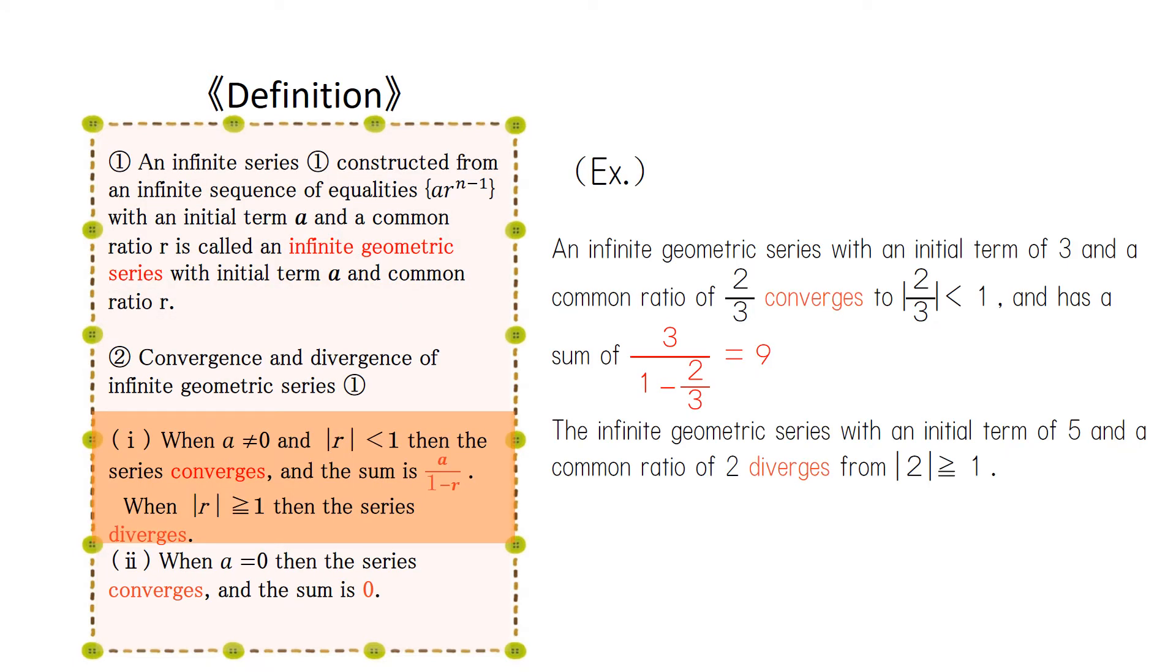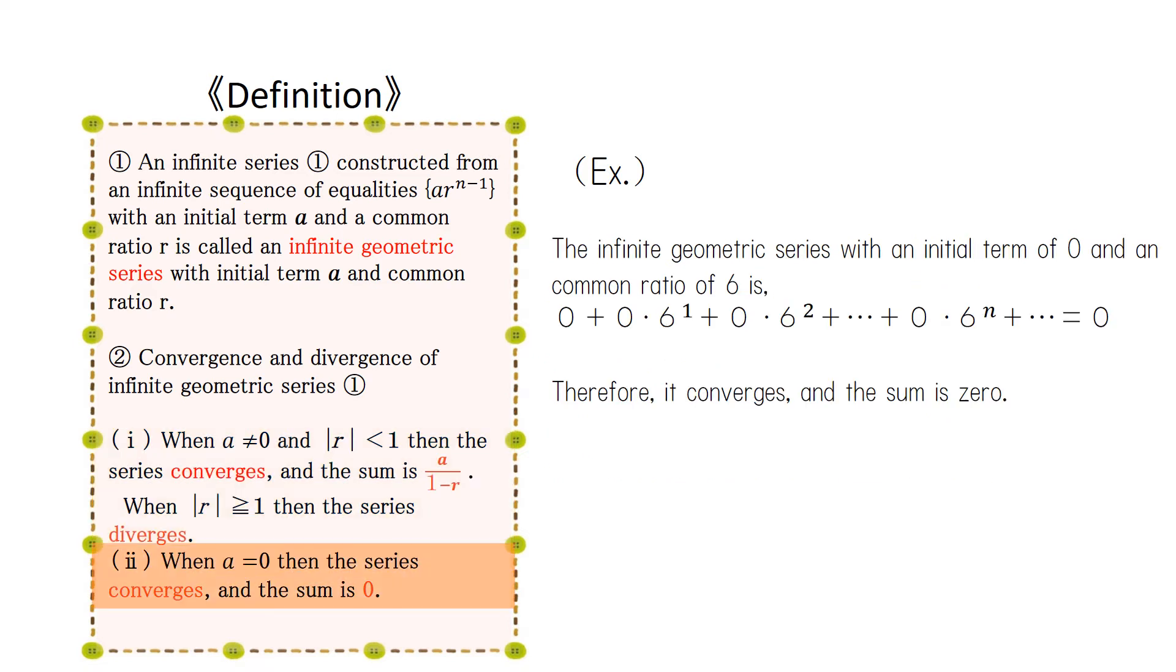If the first term a is not equal to 0 and the absolute value of r is less than 1, then the series converges and the sum is a/(1-r). When |r| is greater than or equal to 1, then the series diverges. When a equals 0, then the series converges and the sum is 0.